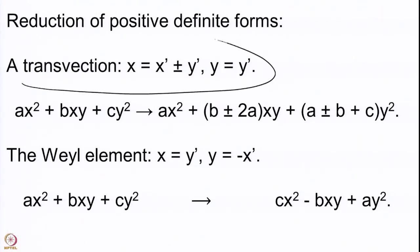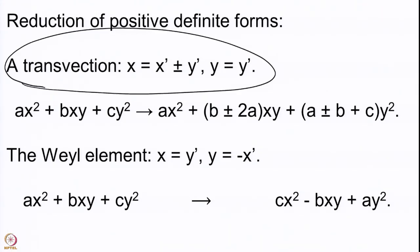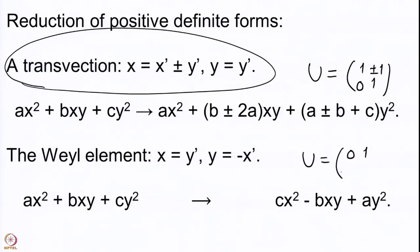The first transformation is called a transfection. It is represented by the matrix whose diagonal entries are 1, the upper diagonal entry can be plus or minus 1, and the lower diagonal entry is 0. Transfection is a very general term — if you study matrix groups and geometric algebra, you will see that transfections are omnipresent there, appearing in almost every such matrix group and being very useful.